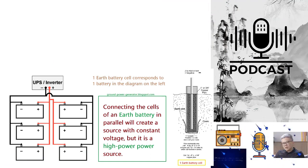While voltage is a crucial parameter, it is not the sole factor in evaluating the performance of an earth battery. Capacity, often measured in ampere-hours (Ah) or watt-hours (Wh), represents the battery's ability to store and deliver electrical energy over time.